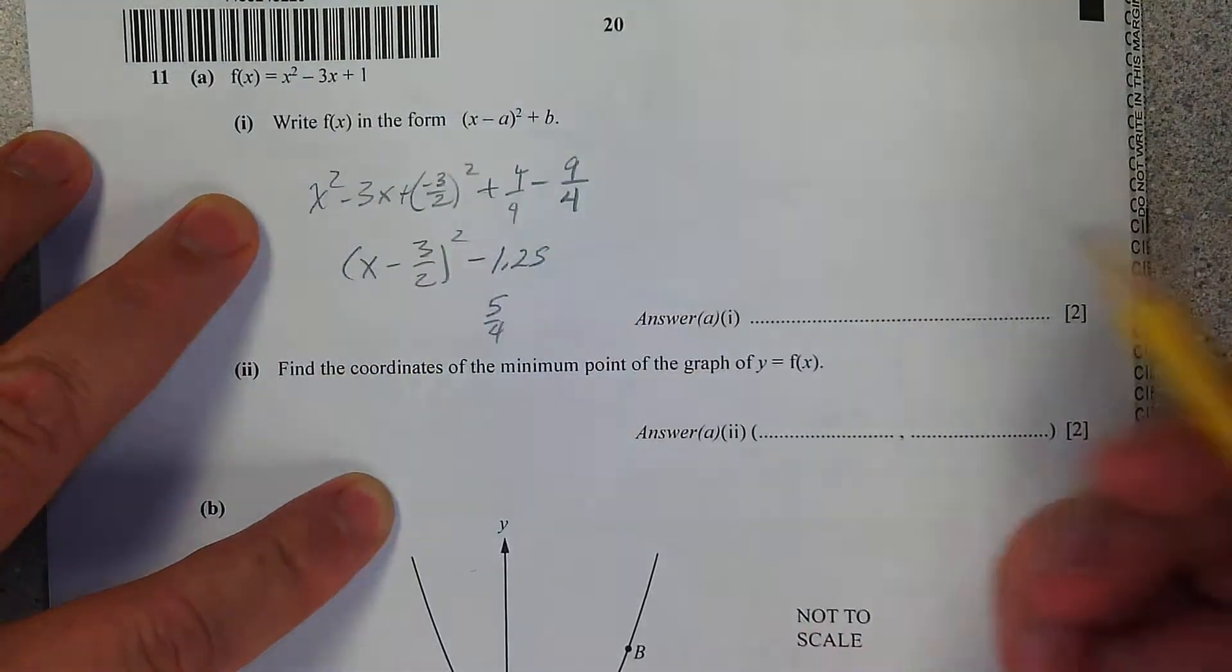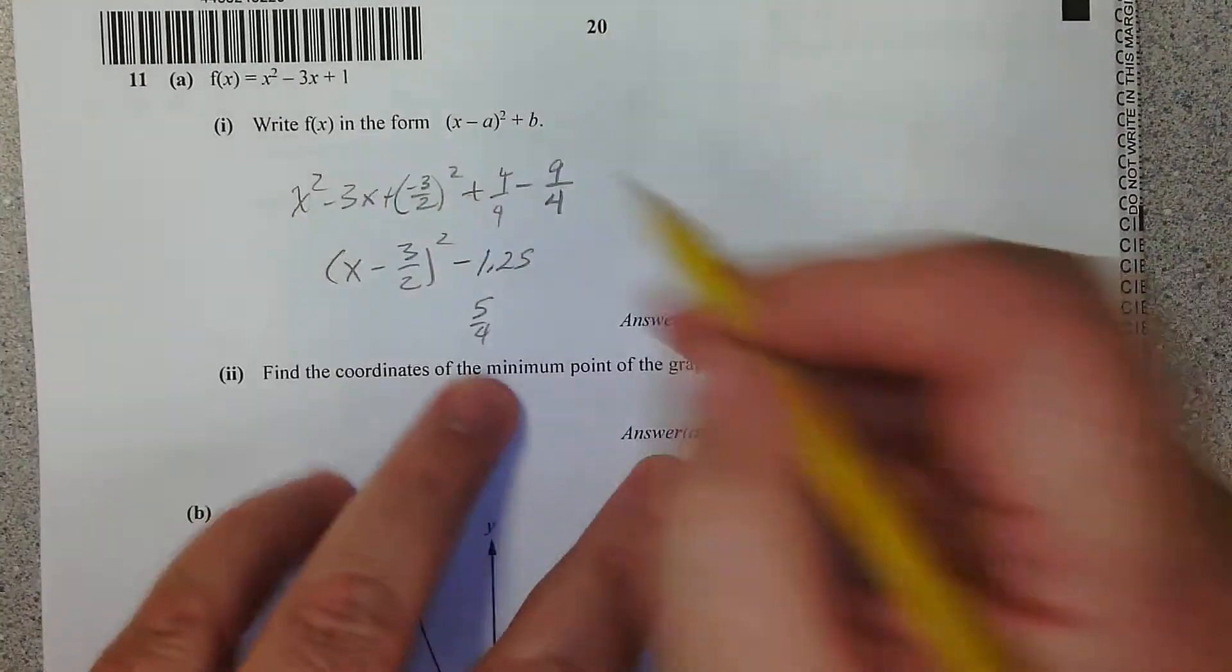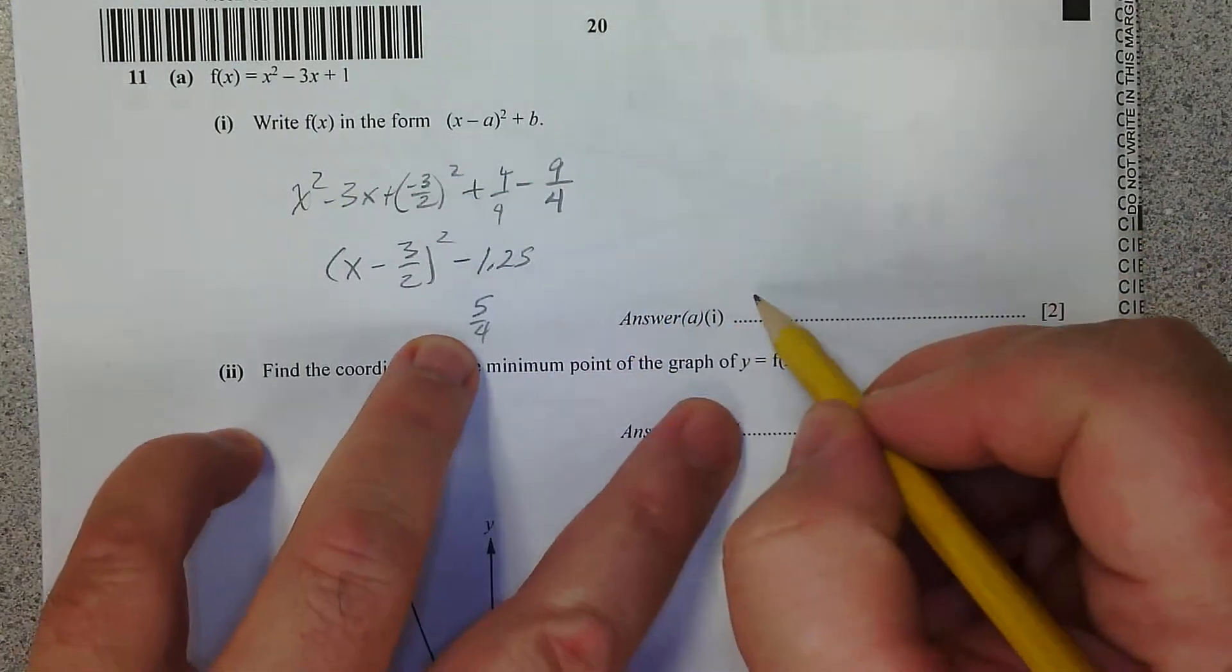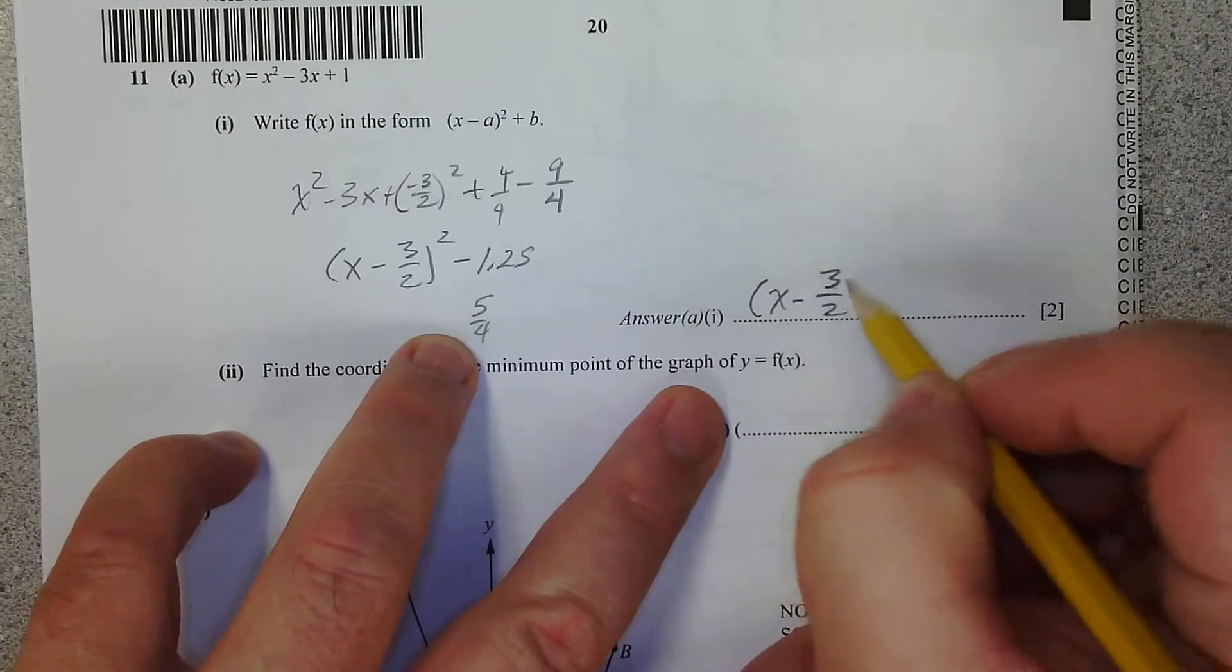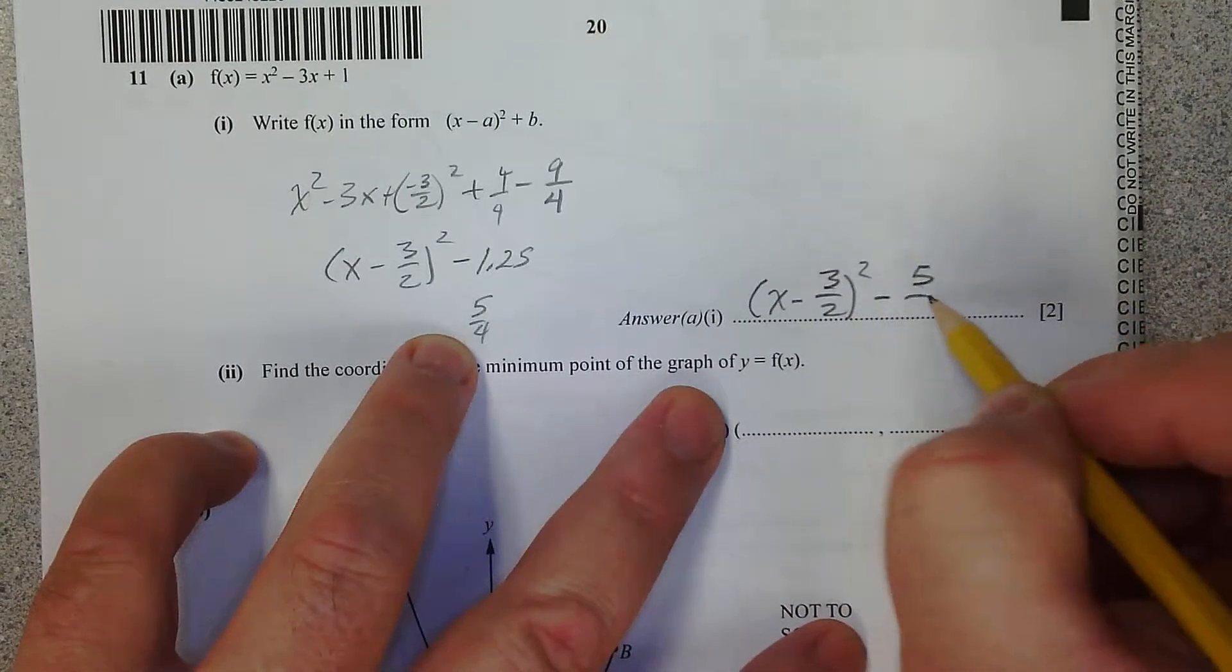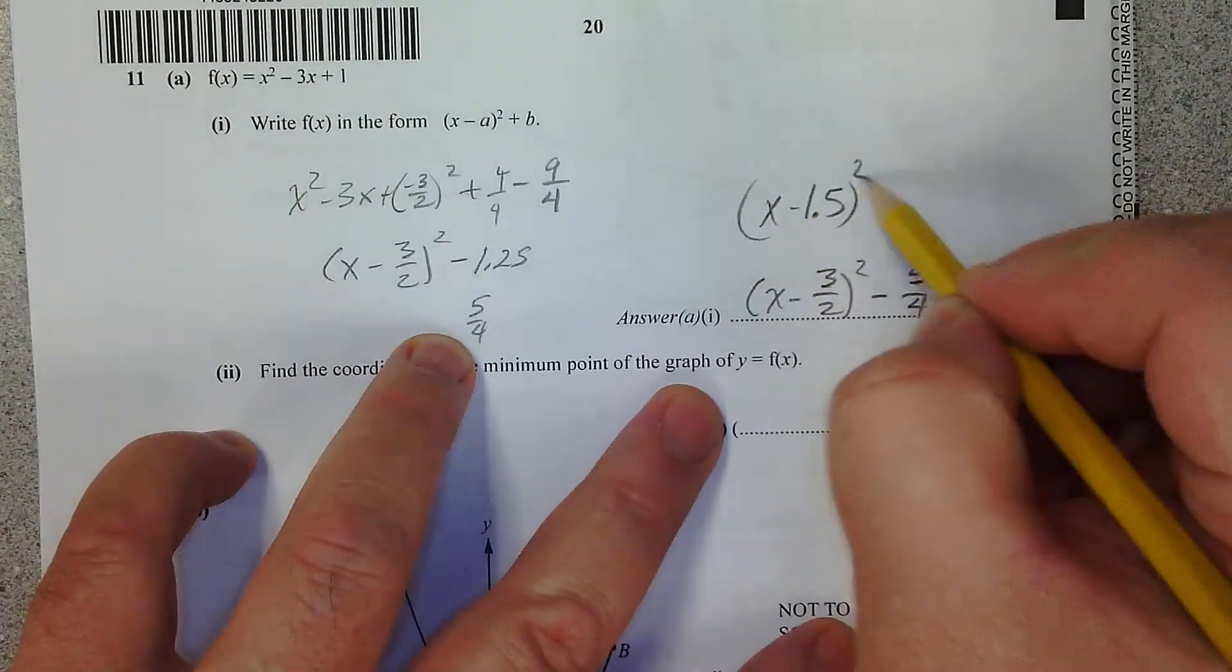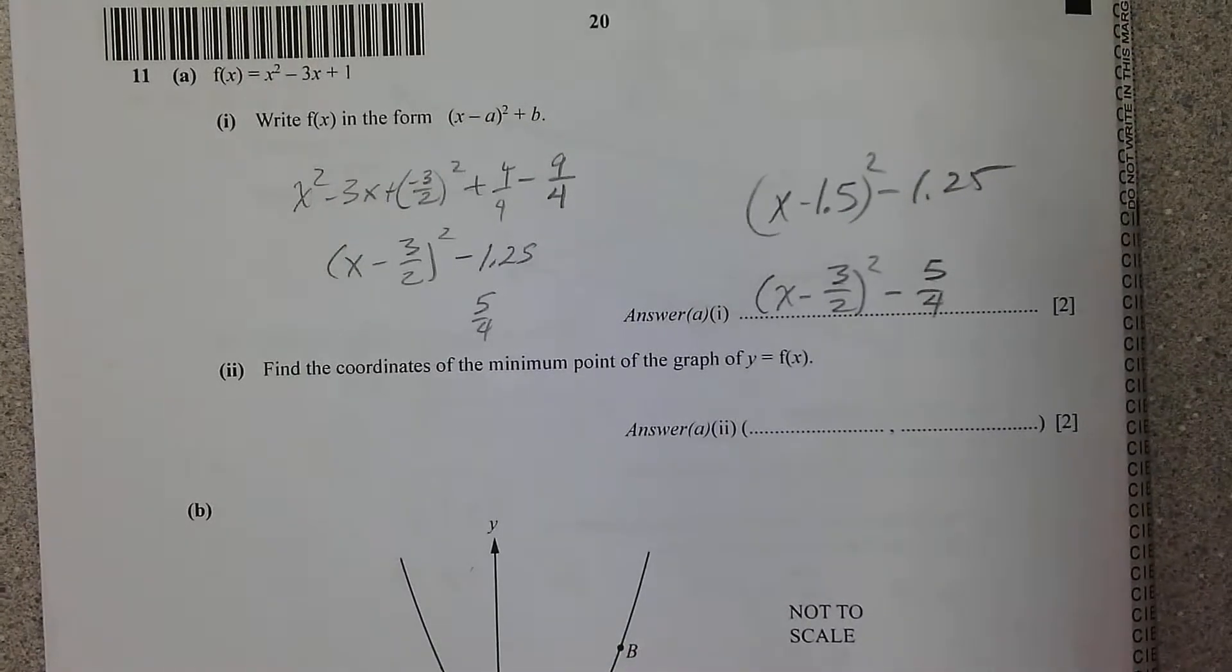It says write in form. So we're not actually being asked for the vertex. Here's what we're going to do: it's going to be x minus 3 over 2 squared minus 5 over 4. You could write it this way as well: negative 1.5 squared minus 1.25. I prefer the fractions for this one.